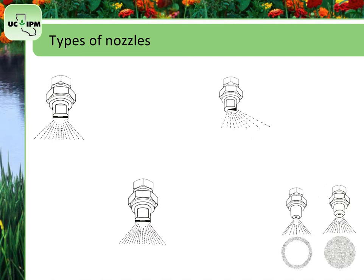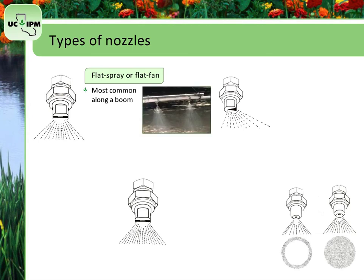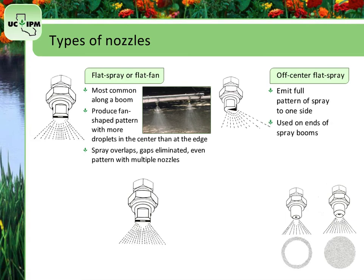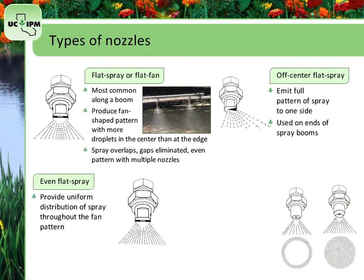Nozzles are designed for specific types of applications. For example, nozzles made to apply herbicides in a field may be unsuitable for applying insecticides to foliage. Flat spray or flat fan nozzles are the most common nozzle type attached along a boom, a pipe either connected to a vehicle or used by hand. They produce a fan-shaped pattern that has more droplets in the center part of the fan than at either edge. This allows for overlap of the spray, eliminates gaps, and gives an even pattern when multiple nozzles are used. Off-center flat spray nozzles emit a full pattern of spray to one side of the nozzle and are used on the ends of spray booms to extend the reach. Even flat spray nozzles provide a uniform distribution of spray throughout the fan pattern and are used to apply separate bands of pesticide.